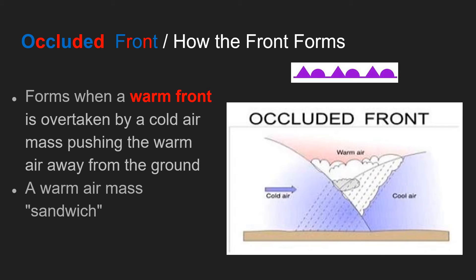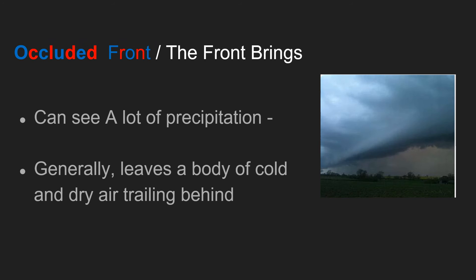The last one we're going to talk about is an occluded front. This happens when we already have a warm front — the warm air has slowly overtaken that cool air mass. Now another cold air mass is sneaking up behind and it's moving faster than the warm front. When it hits, it pushes the warm air up, making kind of a warm air mass sandwich — cold on the left and cold on the right, with the warm air pushed up away from the ground. We can generally see a lot of precipitation, and it generally leaves some cold, dry air once it moves out of the area. Occluded fronts are a little less common.